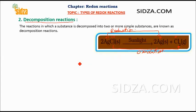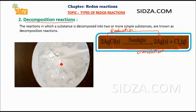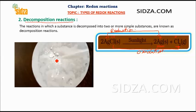Let's see how this reaction occurs. This is the silver chloride AgCl prepared in the lab. Silver chloride, once exposed to sunlight, breaks down into metallic silver and chlorine gas. This compound has a white color — white precipitation of silver chloride. Let's see how it decomposes once we expose it to sunlight.